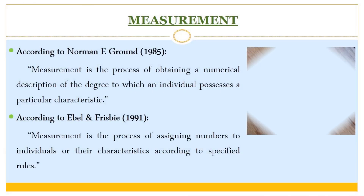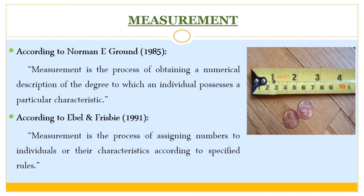What is measurement? According to Norman E. Grond, measurement is the process of obtaining a numerical description of the degree to which an individual possesses a particular characteristic. According to Ebel and Frisbee, measurement is the process of assigning numbers to individuals or their characteristics according to specified rules.